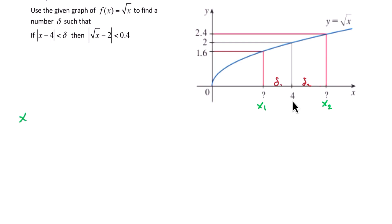So x1 is the solution to the square root of x equals 1.6. And we know that because the function is the square root of x, and at x1, the y value is 1.6. So we can now solve this by squaring both sides, and that will give us that x1 is equal to 2.56.